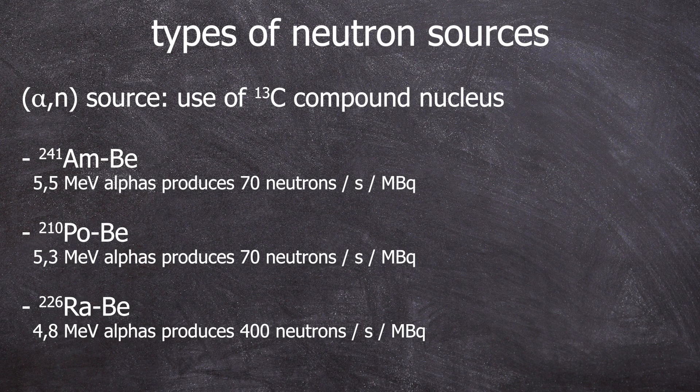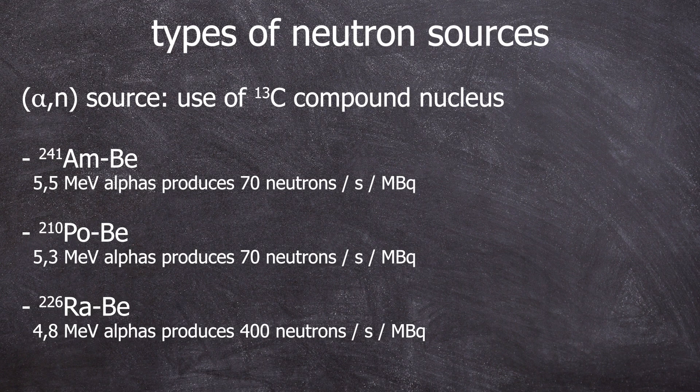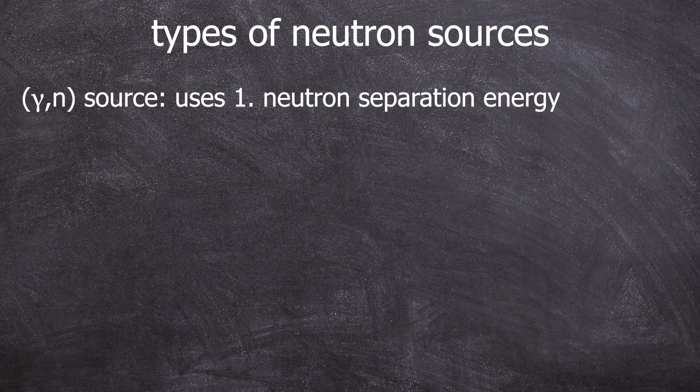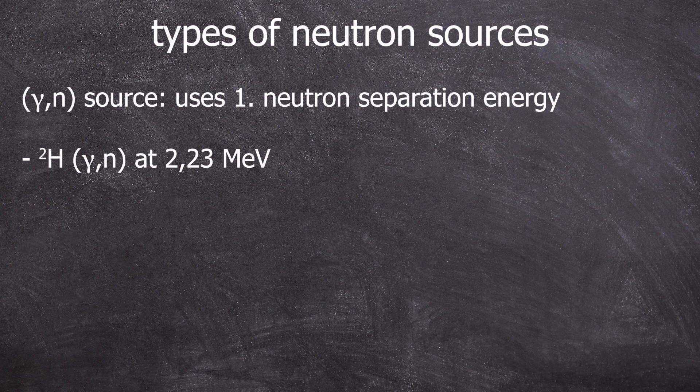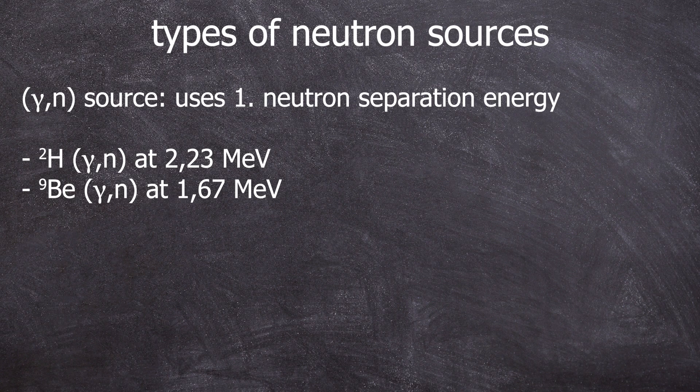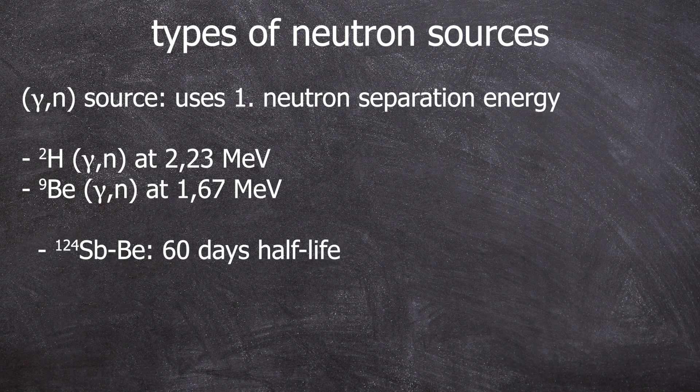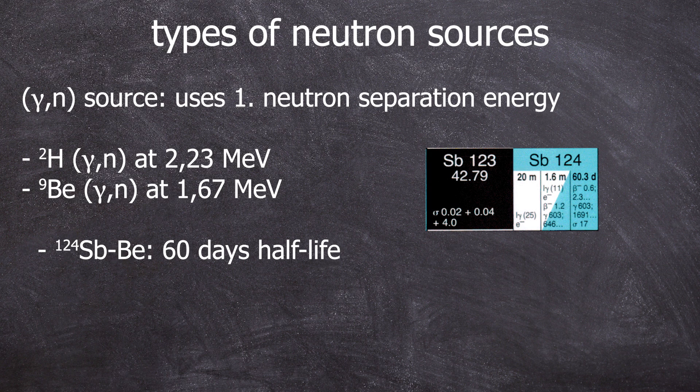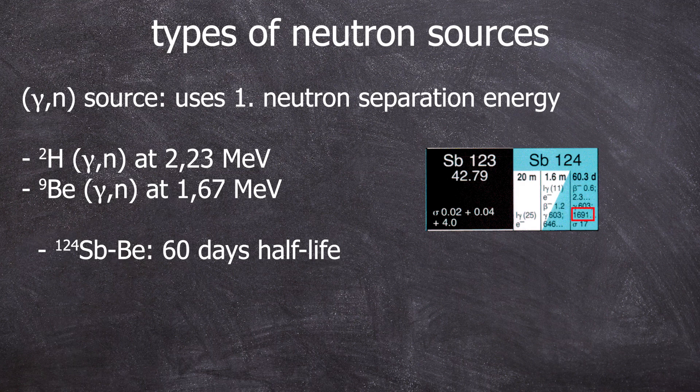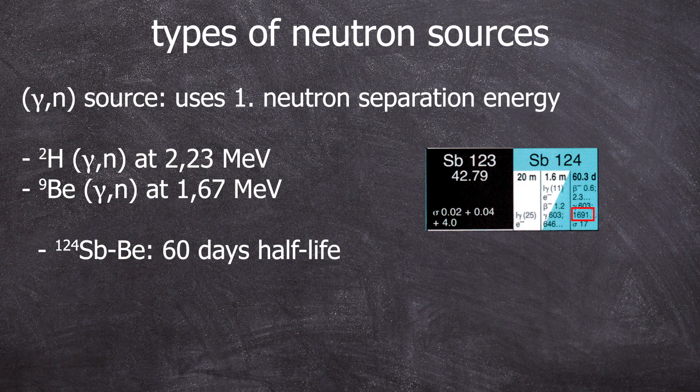It works with several other alpha emitters as well, but there are other neutron source types that generate neutrons, for example, via a gamma-N reaction. You could irradiate deuterium with 2.23 mega electron volt gammas, or beryllium-9 with 1.67 mega electron volts. But there is also a variant that runs on antimony-124. You irradiate a mixture of natural antimony-123 and beryllium powder in a reactor. Breed antimony-124 and this isotope has gamma lines with more than 1.67 mega electron volts, which can trigger the gamma-N reaction described earlier.